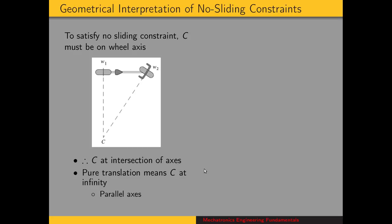Now we'll use this to look geometrically at the no sliding constraint. Here we have a rigid body whose velocity is equivalent to rotation about some instant center. From the no sliding constraint, the velocity of a point on the wheel has to be perpendicular to the wheel's axis. And we know the velocity of a point is perpendicular to the vector from the instant center to that point. So that means the instant center must be somewhere on the wheel axis.